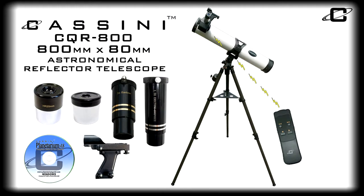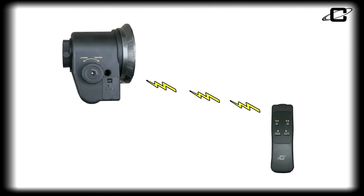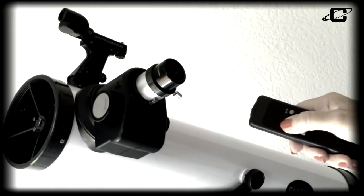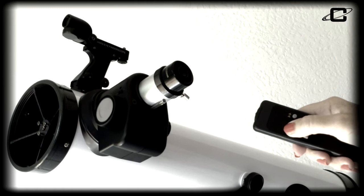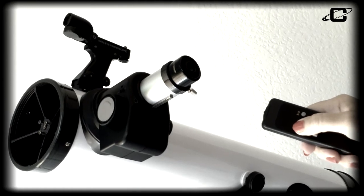The Cassini CQR800 incorporates our new wireless electronic stabilizing focuser so you can focus in on your target object using the wireless handbox controller without touching the telescope, increasing the telescope's stability for clearer images.